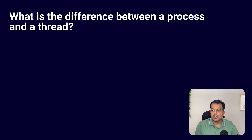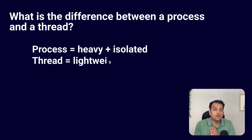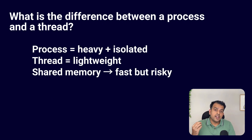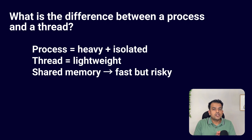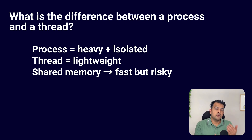Then there was a multi-threading question: what is the difference between a process and a thread? A process is an independent program with its own memory, while a thread is a smaller unit inside a process. Threads share memory, so communication is faster between threads, but shared memory also increases the chances of conflict. Processes are heavy compared to threads. Threads are lightweight, and using multi-threading improves performance but must be handled carefully.